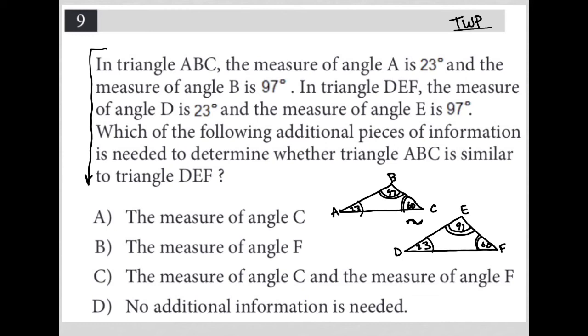Choice A says the measure of angle C - that doesn't determine it. We could figure that out. You wouldn't have to tell me what angle C's measurement is. Choice B, the measure of angle F doesn't do it. Choice C, the measure of angle C and the measure of angle F, that doesn't do it. Choice D, no additional information is needed. Absolutely right.